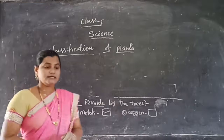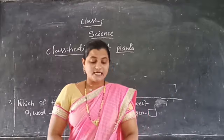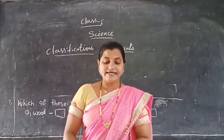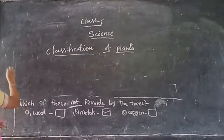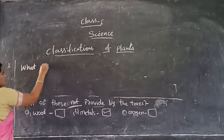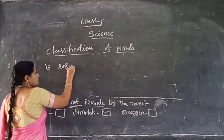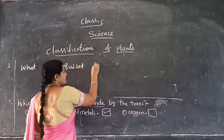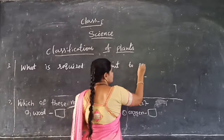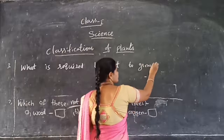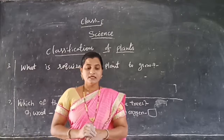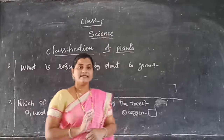What is the third option? Once you look in your textbook — what is required by plants to grow? That is the question. Options are also given to us. What type of options are given? Soil, air, and the third option is both A and B.